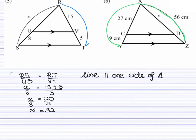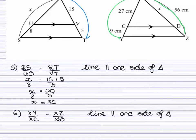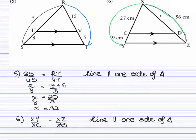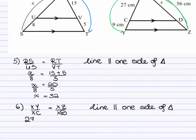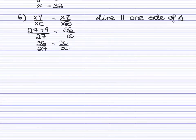Now, looking at question 6. For question 6, again, we're comparing the side XY divided by XC would be equal to XC divided by XD. The reason again is line parallel to one side of triangle. Let us now substitute in the values that we have. XY, that would be 27 plus 9 divided by your XC, which is 27. This would be equal to XD, which is 56 divided by X. When I simplify those ratios, I get 36 divided by 27 is equal to 56 divided by X.